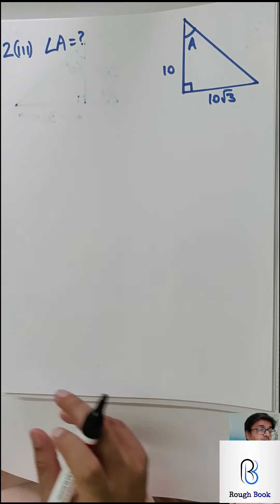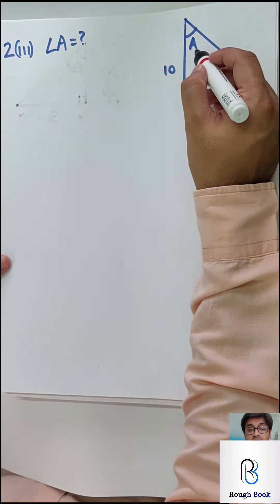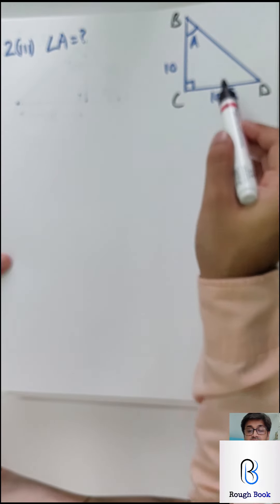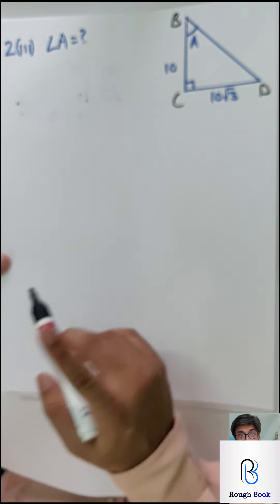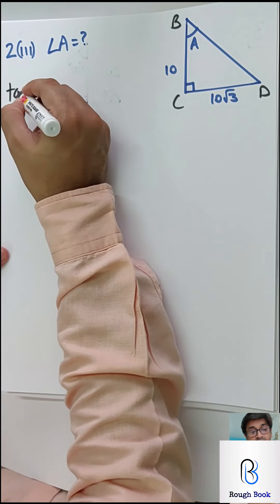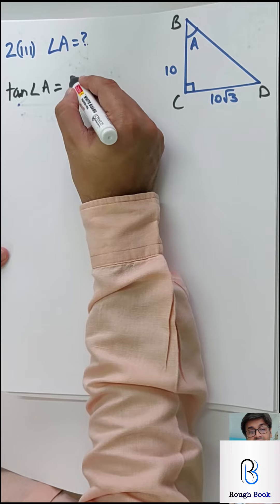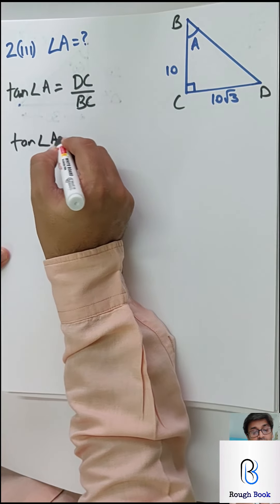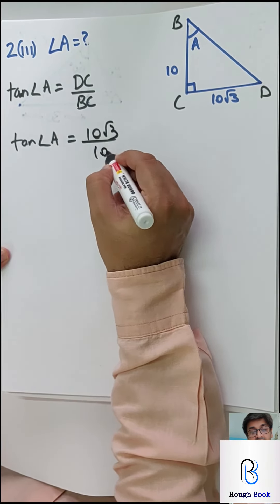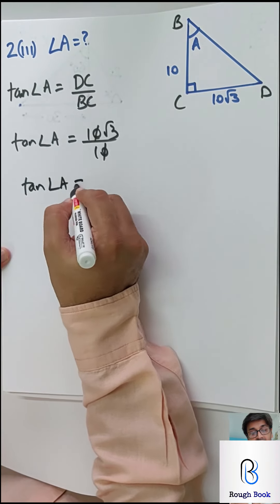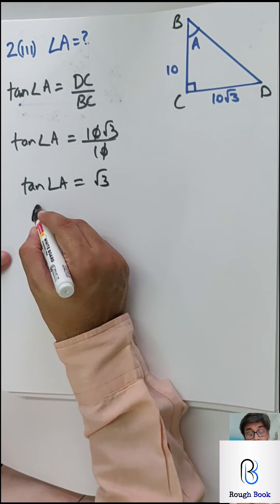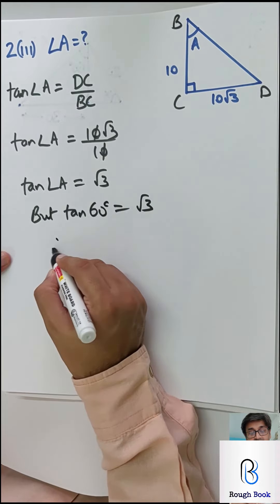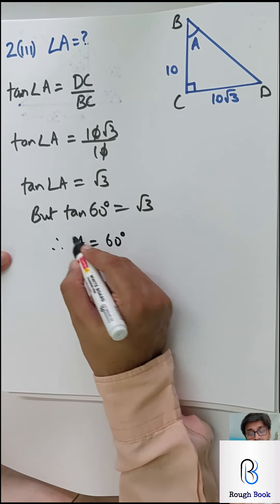Sum 2 Part 3: name it BCD since A is already used. From the point of view of A, the sides are opposite and adjacent — so opposite upon adjacent is tan. Tan angle A equals DC upon BC. DC is 10 root 3 and BC is 10 — they cancel. So tan angle A is root 3. What angle has tan equal to root 3? Tan 60. Therefore A equals 60 degrees again.